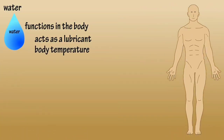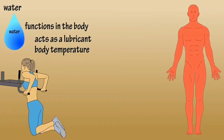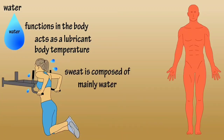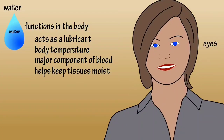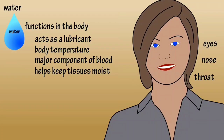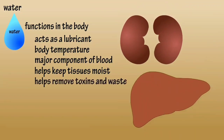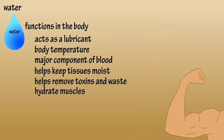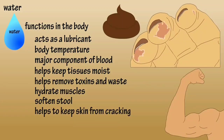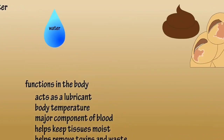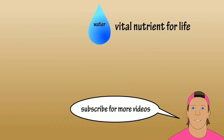Water is important in body temperature regulation. When body heat rises, such as during strenuous activities, the body sweats to cool itself, and sweat is made up almost entirely of water. Water is a major component of blood, which transports nutrients and removes waste from all parts of the body. Water keeps tissues like the eyes, nose, and throat moist. The kidneys and liver use water to remove toxins. Water hydrates muscles, softens stool reducing constipation, and prevents skin from drying and cracking. Water is a vital nutrient for life.